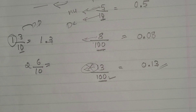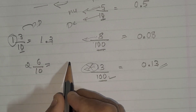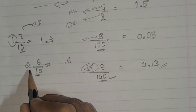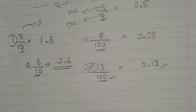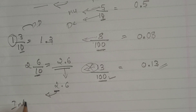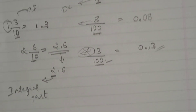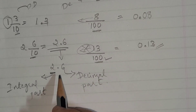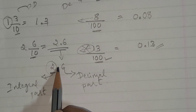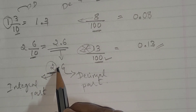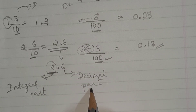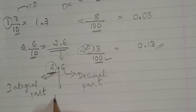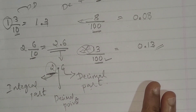Let's take one more example: 2 and 6 by 10. Write six; one zero means point after one digit; then two. So the answer is 2.6. In the number 2.6, we call the digit to the left of the point - the 2 - the integral part, and the digit after the point - the 6 - the decimal part. The dot is called the decimal point.